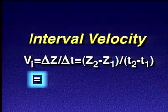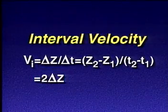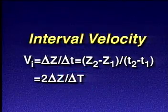vi is also equal to twice the interval thickness, 2 delta z, divided by the two-way interval travel time, delta t.